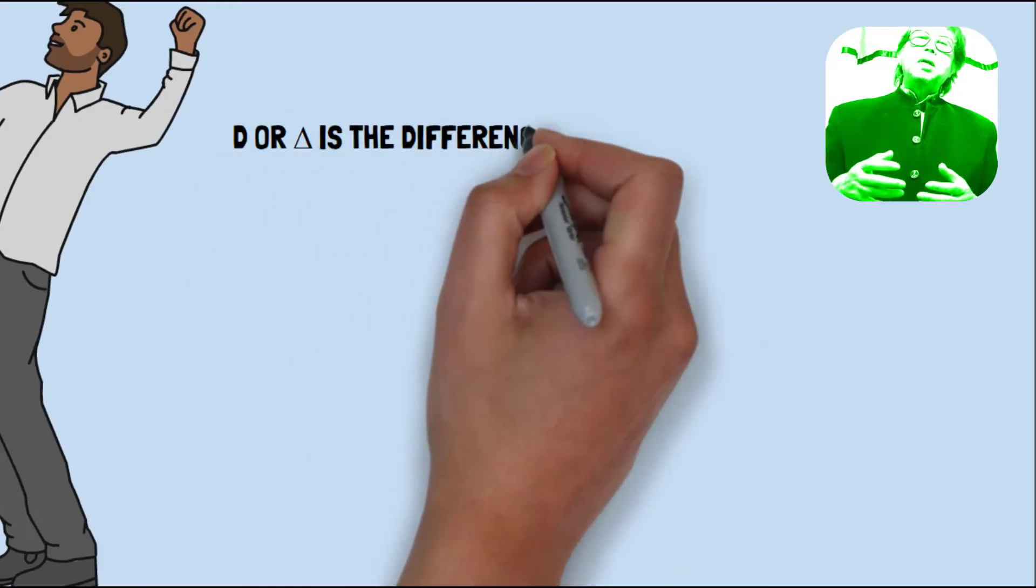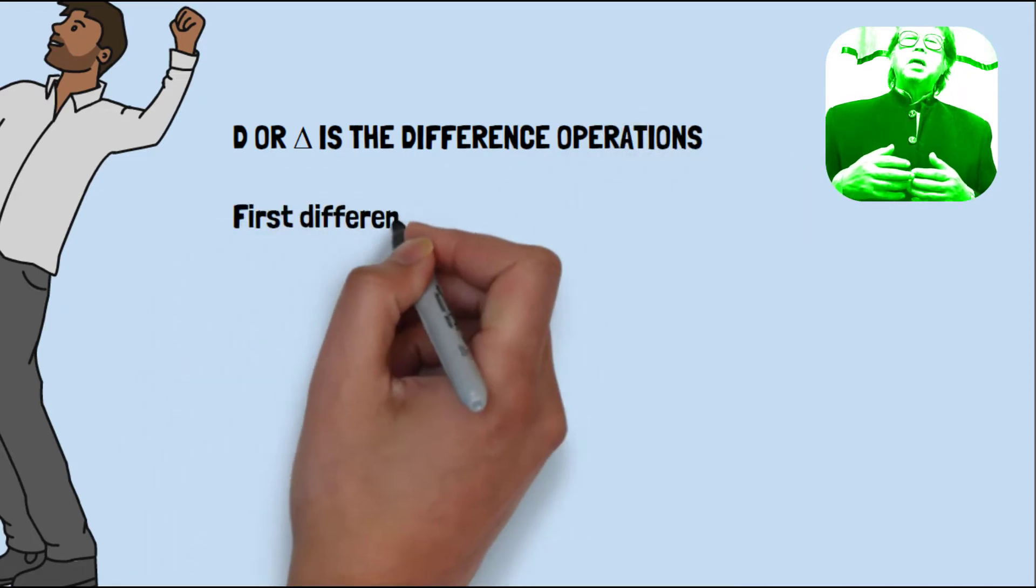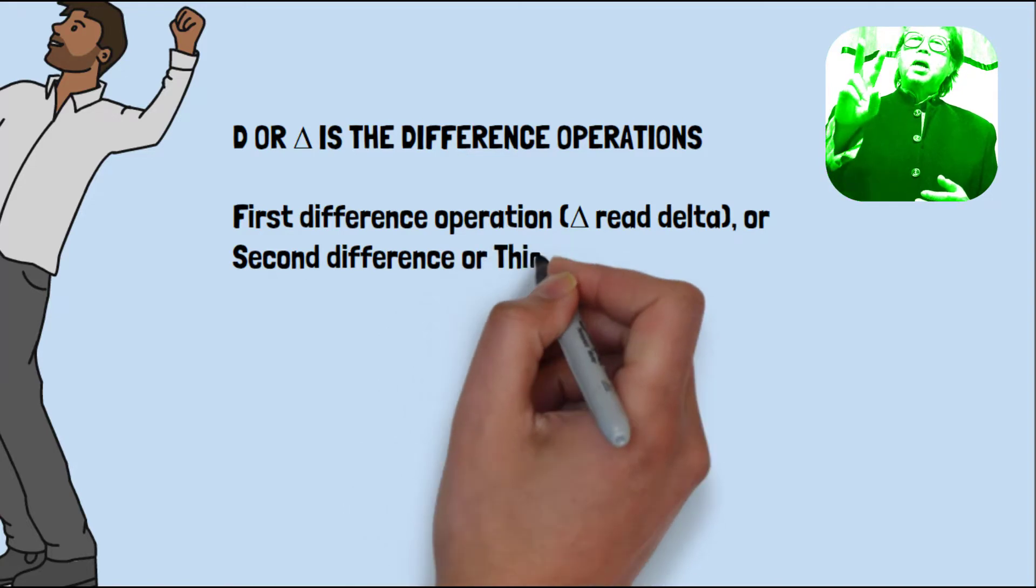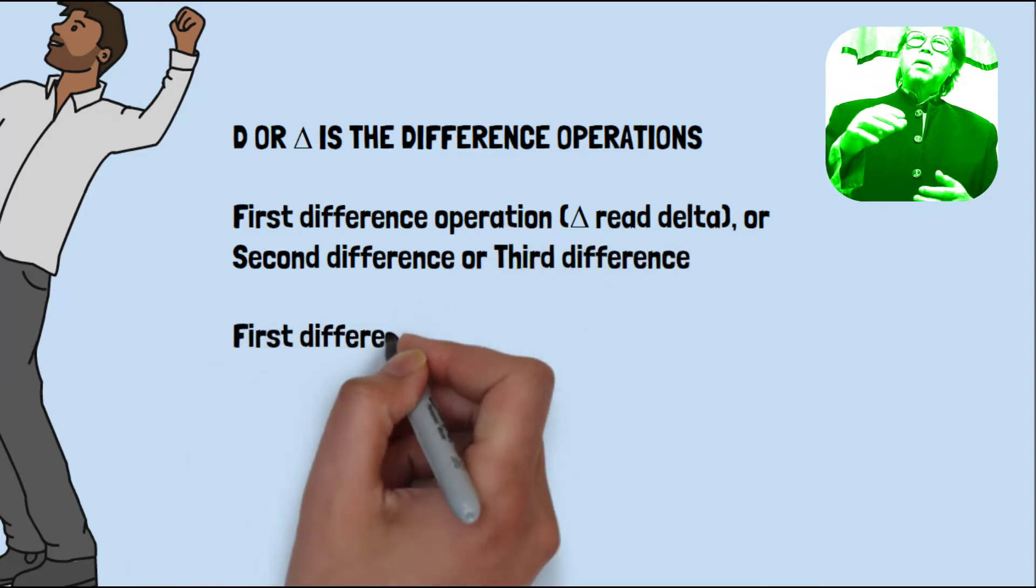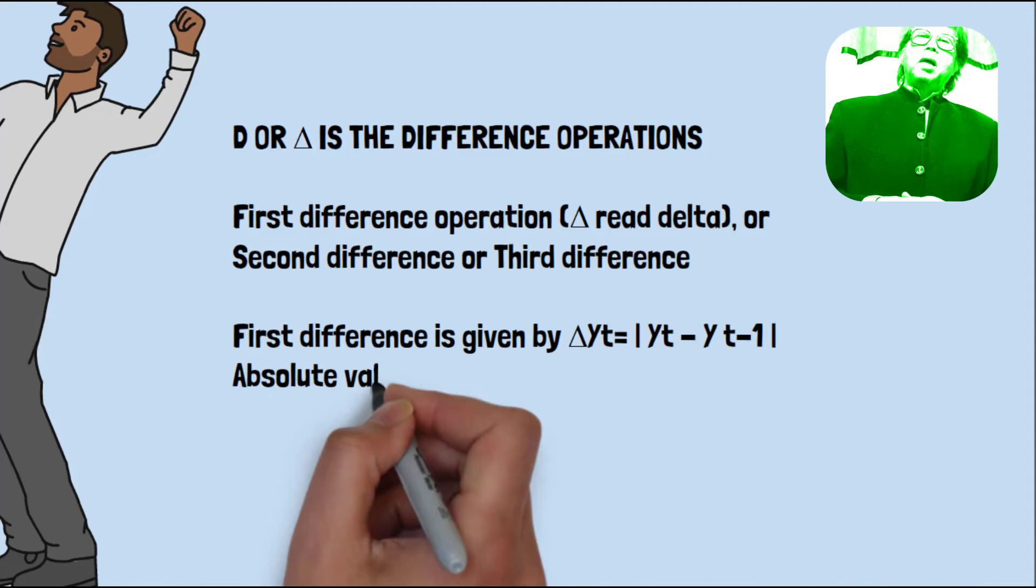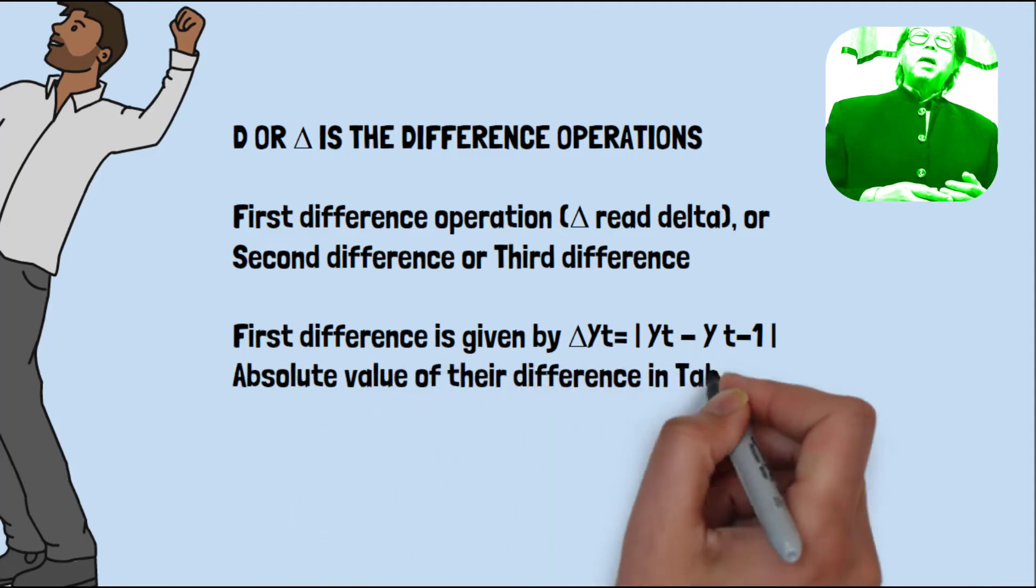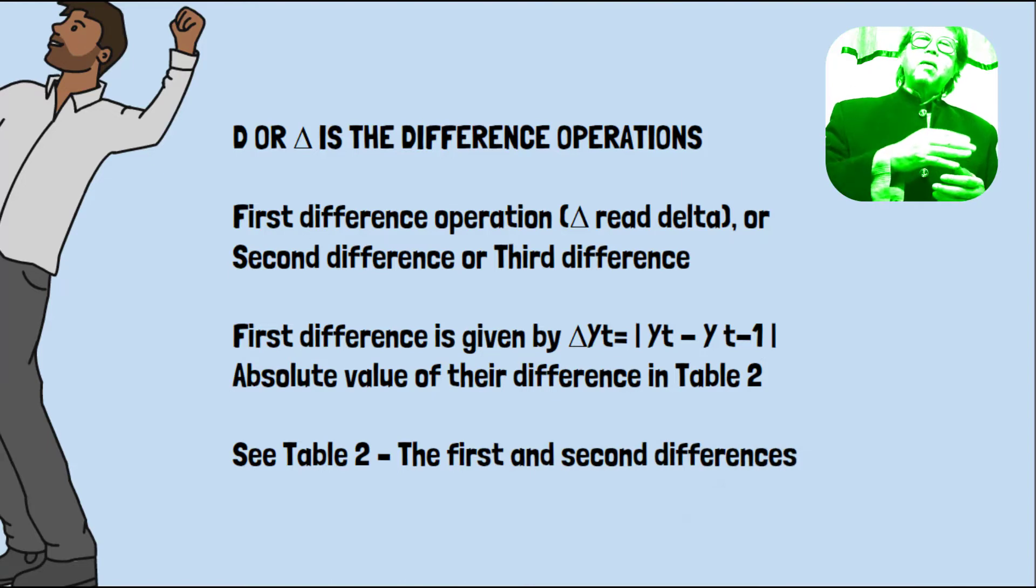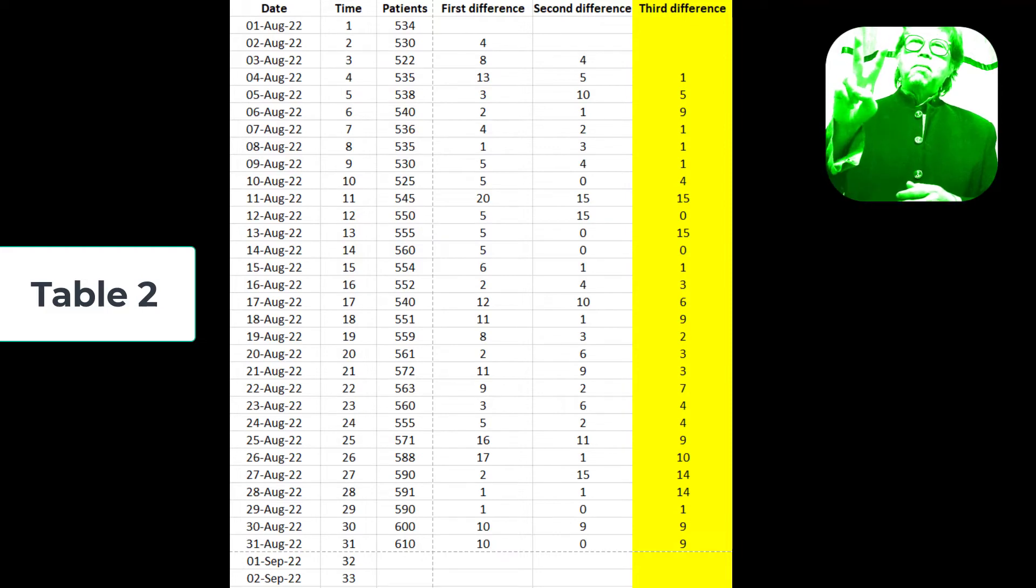The next one is D. D is the difference operation, which can be a first difference or second difference. You can read as delta. A first difference is given by absolute difference, Y1 and lag one period. The absolute value of their differences in table 2, see table 2.